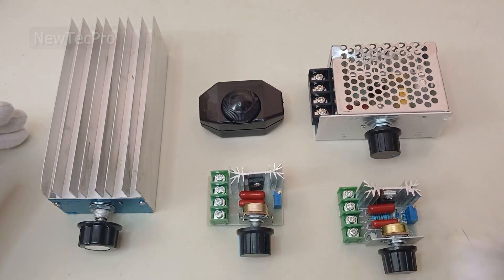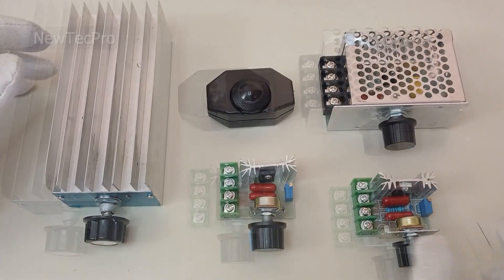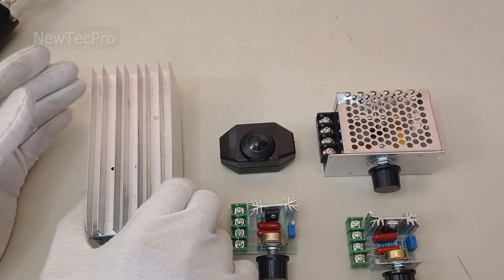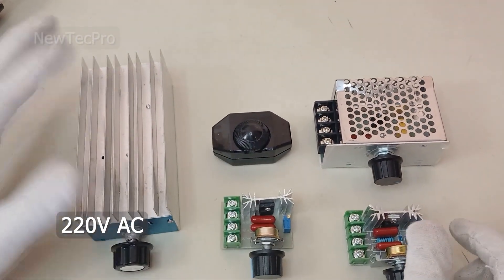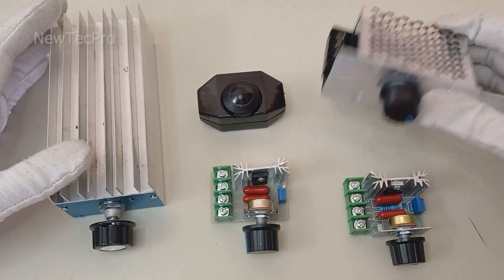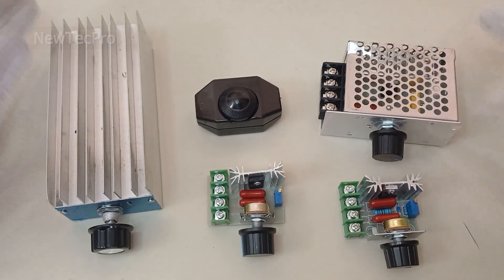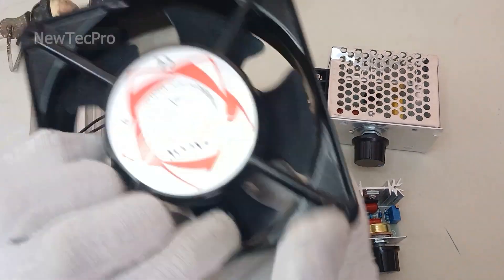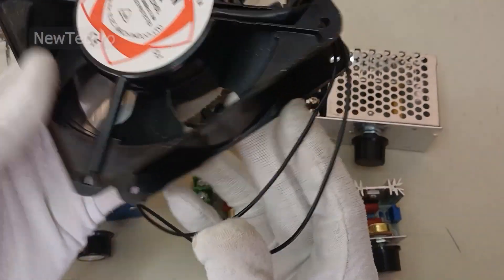Hey everyone, welcome back to NewTek Pro channel. Today we're diving into the world of AC 220 volt dimmers. I'll be showing you how to use this powerful device to control both a light bulb and 220 volt fan. Let's get started.